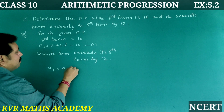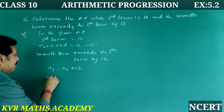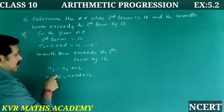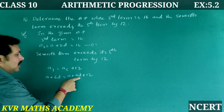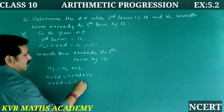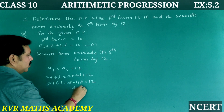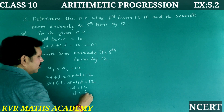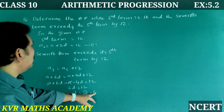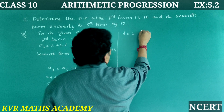In the given AP, the third term is 16, so a + 2d = 16 — this is equation 1. Next, the seventh term exceeds the fifth term by 12, meaning a_7 = a_5 + 12. So a + 6d = a + 4d + 12. Simplifying: 6d − 4d = 12, so 2d = 12 and d = 6.